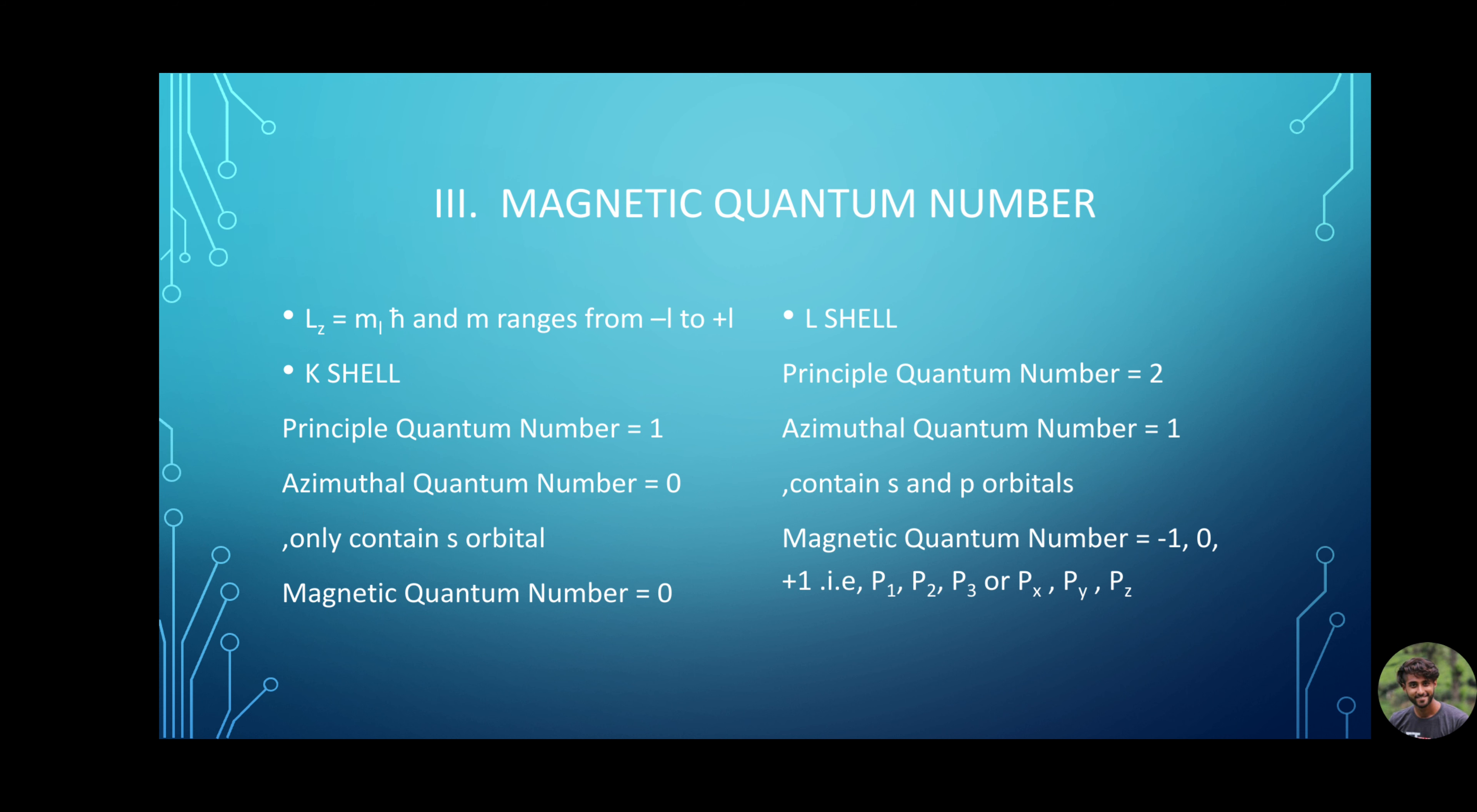Magnetic quantum number. Magnetic quantum number describes the specific orbital within the subshell and yields the projection of the orbital angular momentum along a specific axis. L_z = m_l ℏ. Value of m ranges from -l to +l. This is where some confusion starts and we will clear that. According to the quantum numbers so far, let us see the first shell, K shell. K shell has principal quantum number 1 and azimuthal quantum number 0. That is, it only contains s subshell. Here, magnetic quantum number is equal to 0.